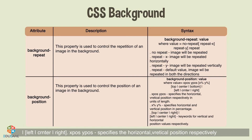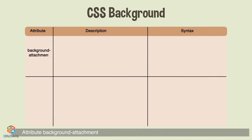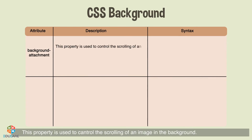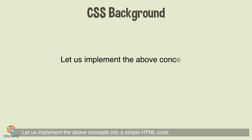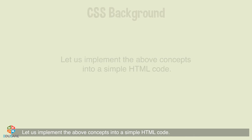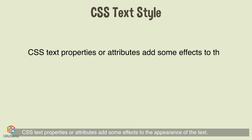X-position followed by y-position specifies the horizontal and vertical position in units of length. X-percentage followed by y-percentage specifies position in percentage. Top, center, bottom and left, center, right are keywords for vertical and horizontal position values respectively. The background-attachment property controls the scrolling of a background image; its value can be either fixed or scroll.